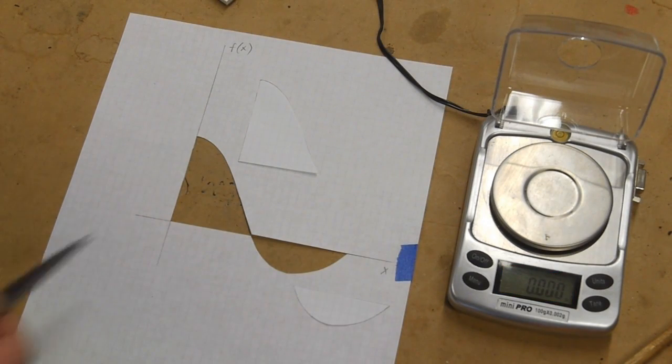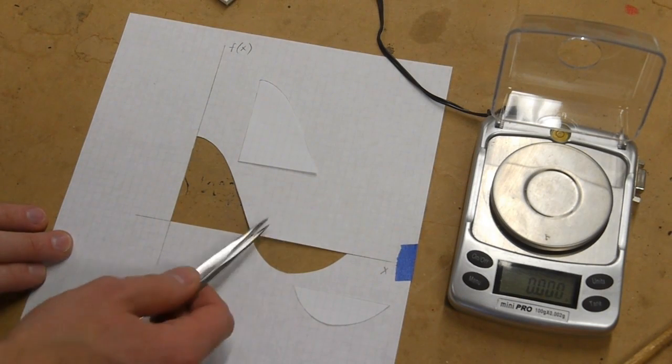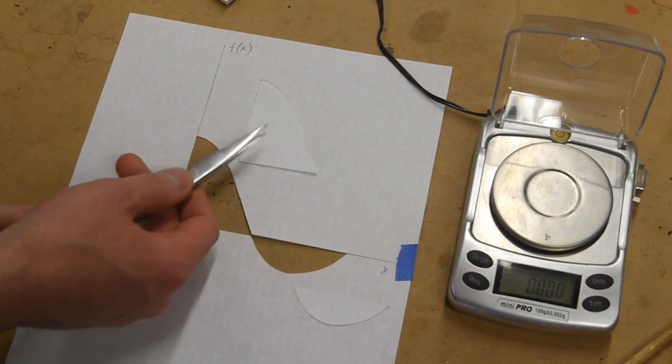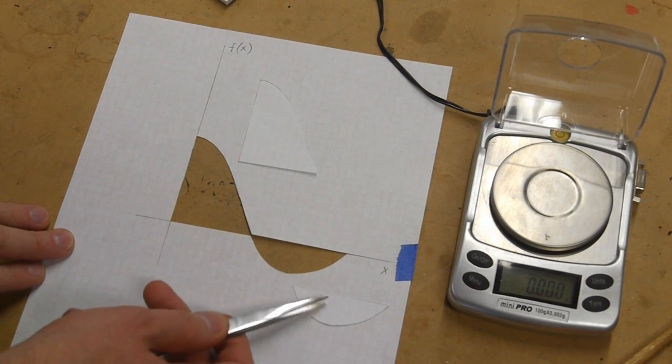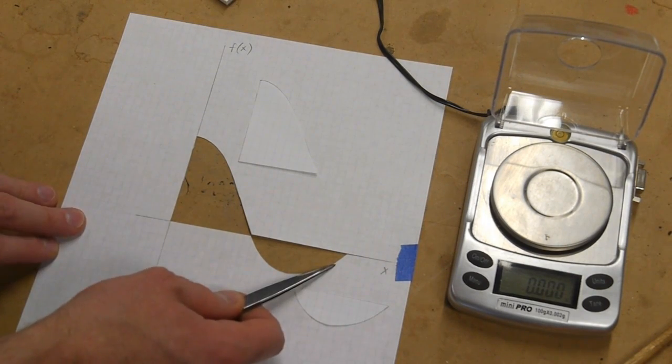This method still works for functions that go below zero, too, of course. What we can do is just cut out the two pieces separately, measure the mass of this, and then subtract this from it. And that will give us the total area under the curve, even though some of it is negative.